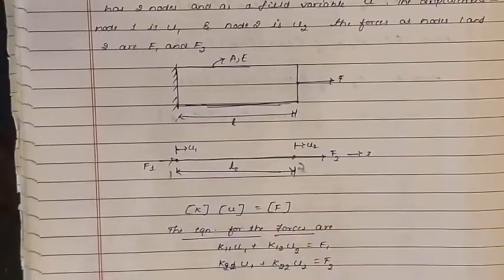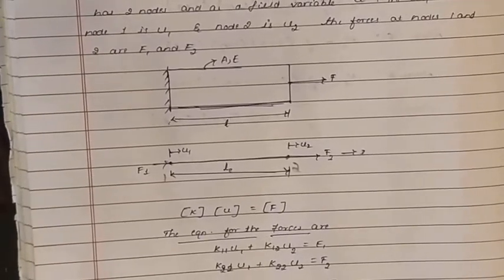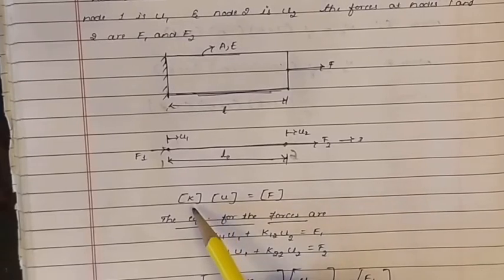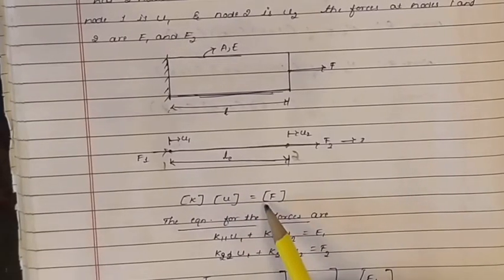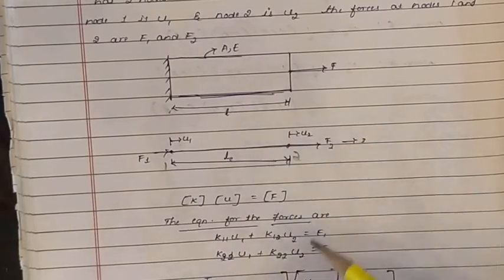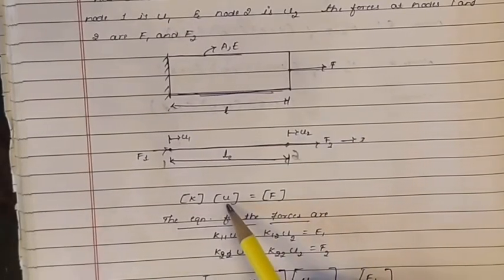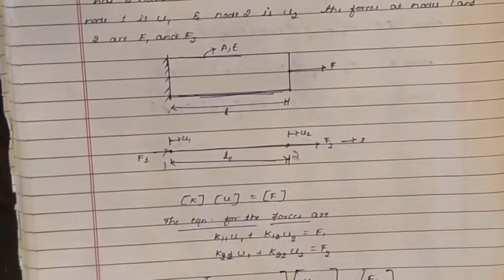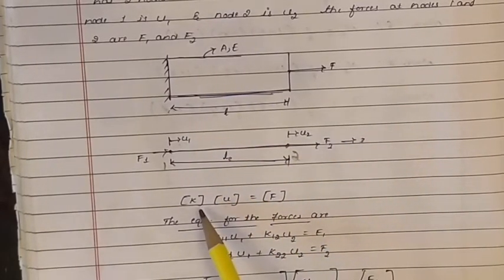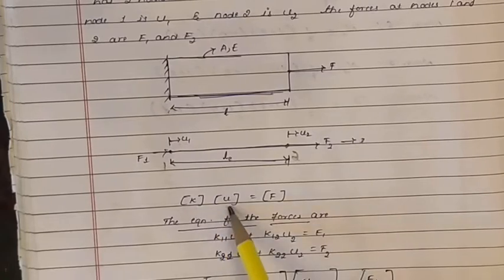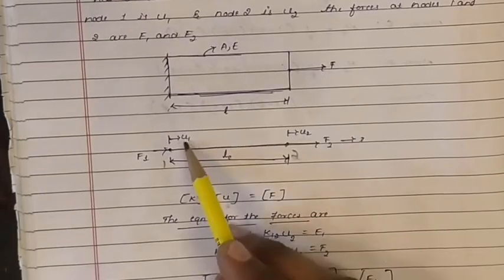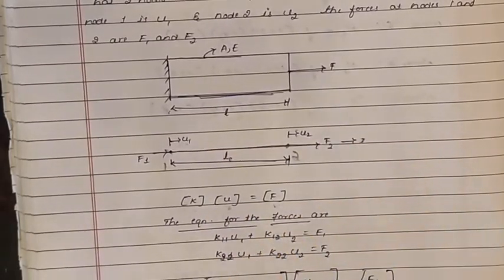Now, the finite element equation. As covered in module 1, the finite element equation is KQ = F. Here I will use u as the notation for displacement, so the equation becomes KU = F, where K is the stiffness matrix, u is the displacement vector, and f is the force vector.